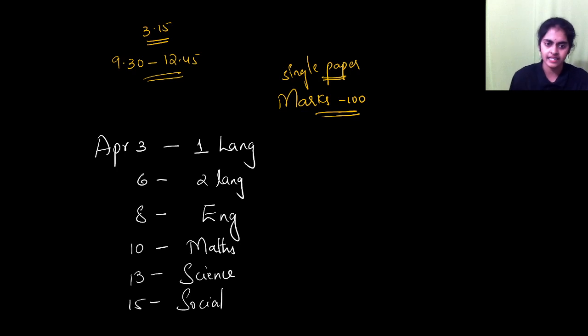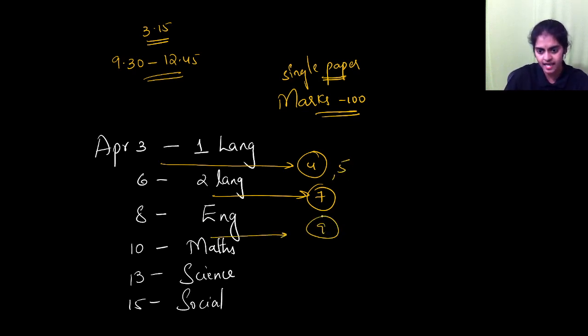So 3rd Hindi first language, 6th second language, 8th English, 10th Maths, and 13th science, and 15th is social. So you can see every day you will have one gap. Here you have 4th is a gap for you. 7th is a gap. Here 4th and 5th is a gap for you. 7th is a gap, and then 9th is a gap. Then here 11 and 12, two days you will have gap for science exam. And 14 is a gap for social exam. For Maths you have only one gap. For science you have 2 days gap.